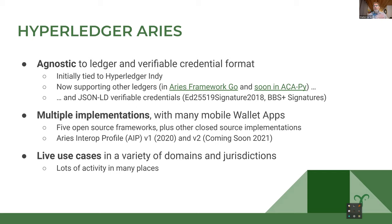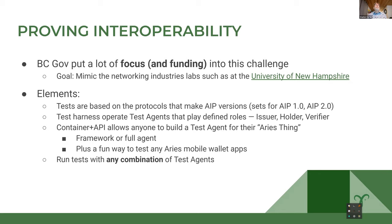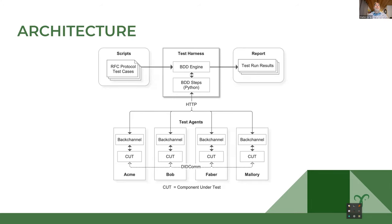There are lots of live use cases — NHS in Britain, lots of things happening here in BC including Orgbook, SICPA is doing a pile of things, Kiva in Sierra Leone, and IATA is working on ARIES. Lots of activity and many proof of concepts happening. BCGov has put a lot of focus and funding into interoperability. Our goal is to mimic John Jordan's model — the University of New Hampshire has a networking interoperability lab where Cisco takes new networking equipment and checks it against everyone else. That's really what we're trying to do: create a mechanism to test all sorts of different things running against each other in a clear way.